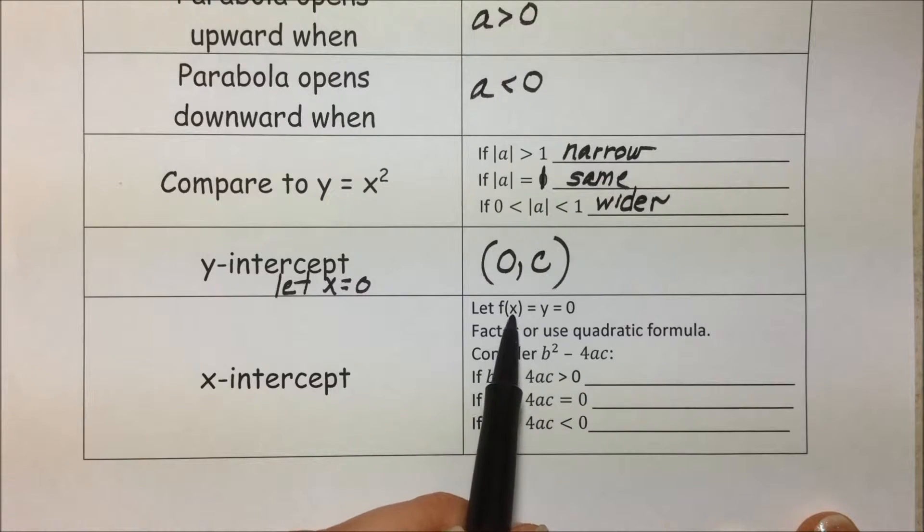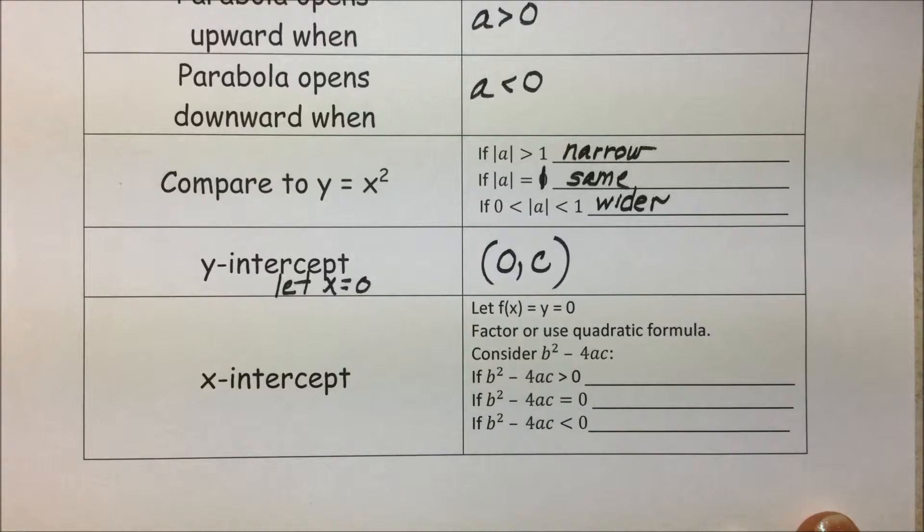To find the x-intercept, we let the f(x), which is actually our y, equal 0. We can either factor or use the quadratic formula to find our x-intercepts, which are the roots or solutions to the equation.